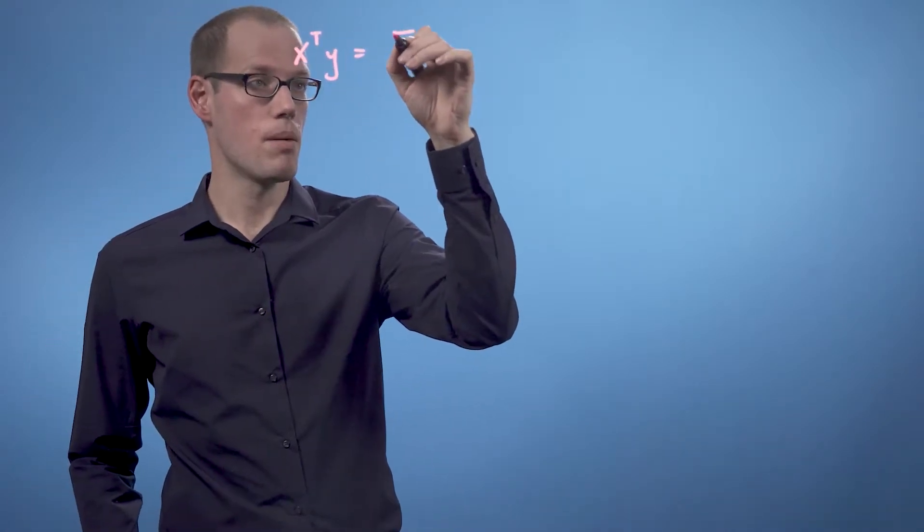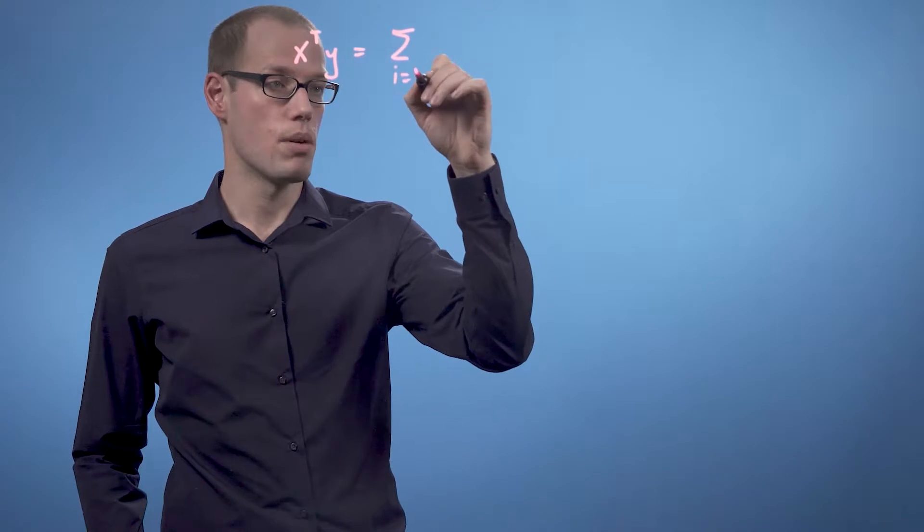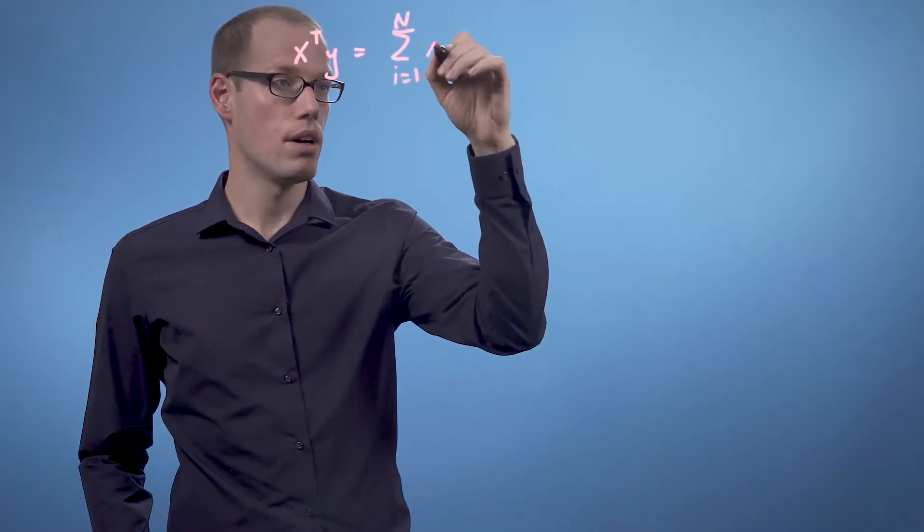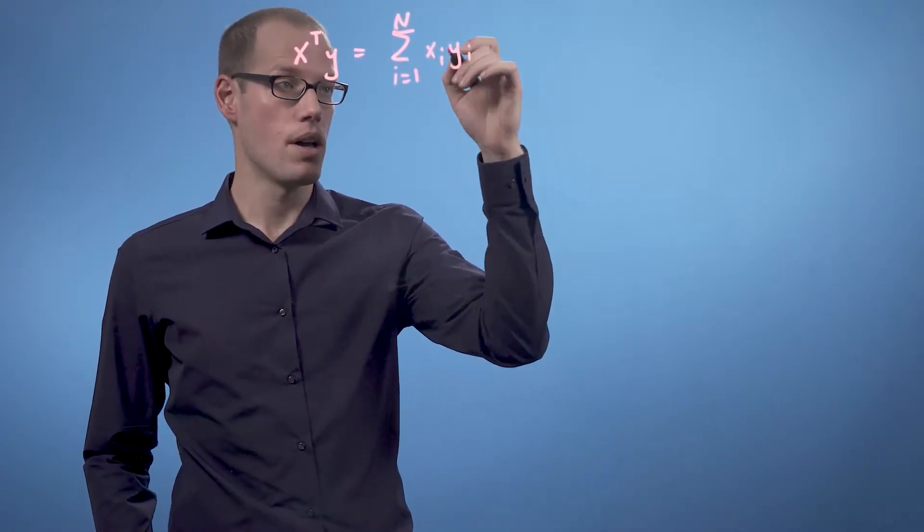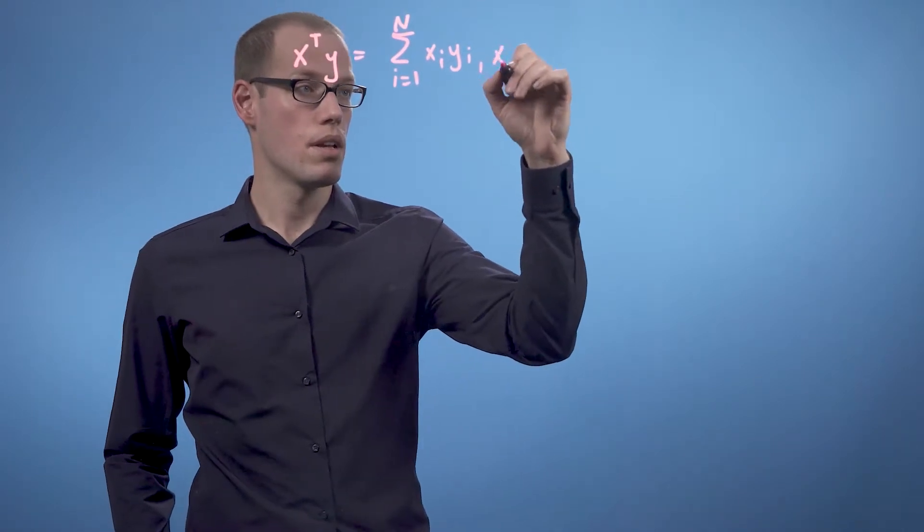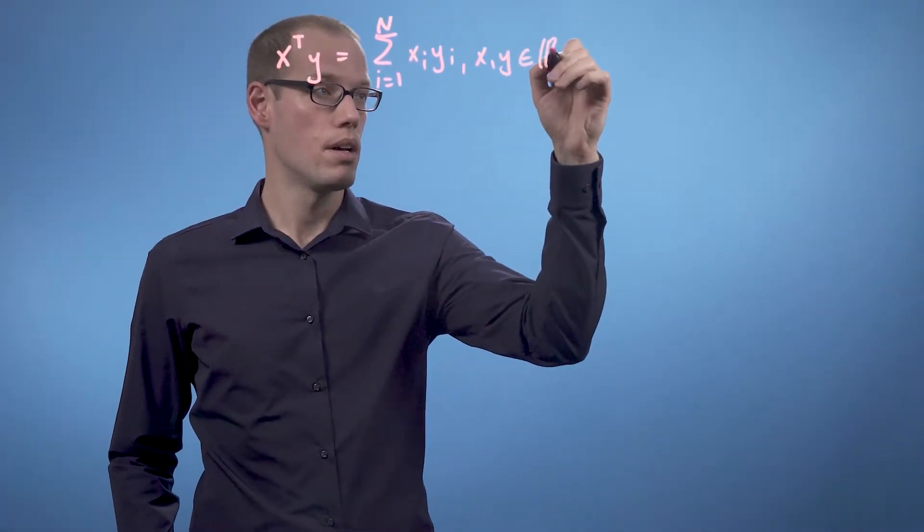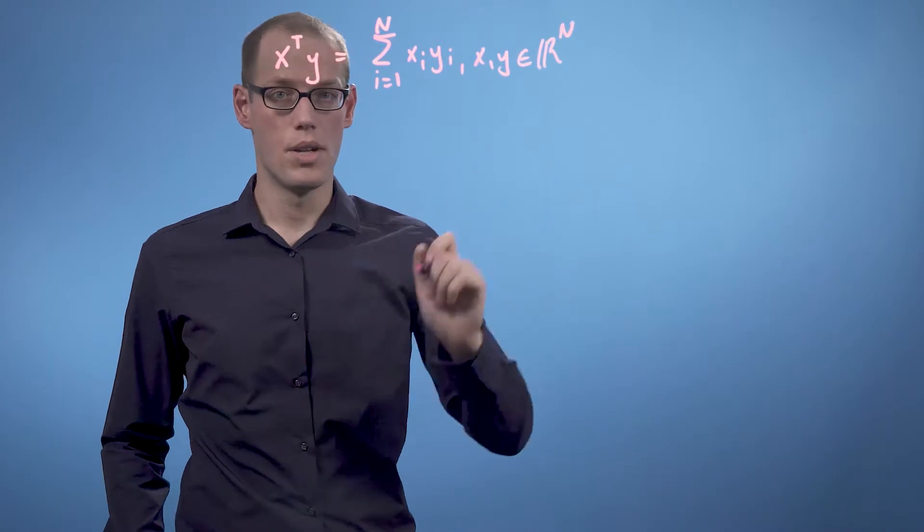An example of an inner product that we may know already is the dot product between two vectors x and y. If x and y are two vectors in Rn, then the dot product is defined as x transpose y equals the sum from i equals 1 to n of xi times yi, where x and y are n dimensional vectors.